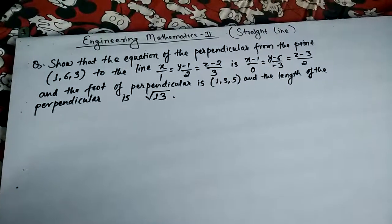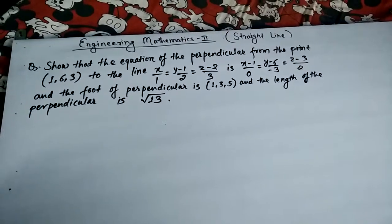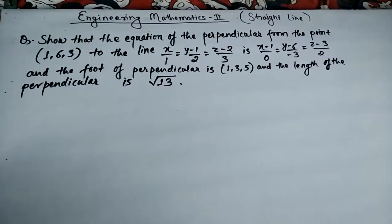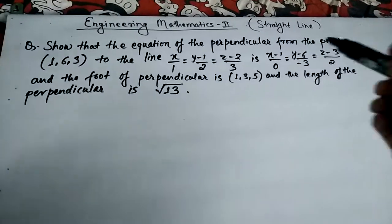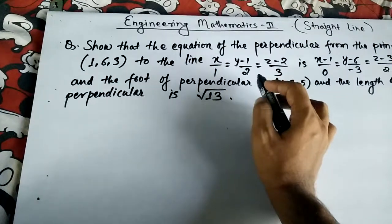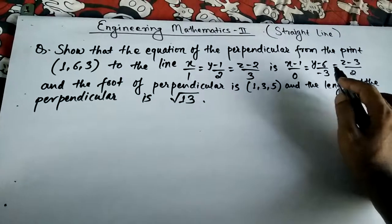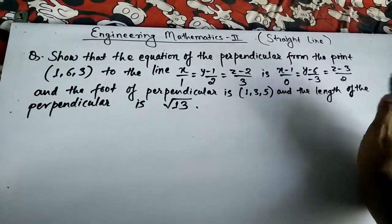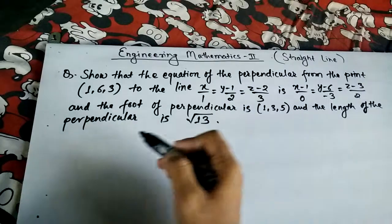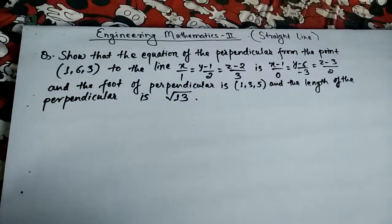Hello guys, welcome to another video tutorial on straight lines from engineering mathematics. We have a question: show that the equation of the perpendicular from the point (1,6,3) to the line x/1 = (y-1)/2 = (z-2)/3 is x-1/0 = (y-6)/-3 = (z-3)/2, and the foot of perpendicular is (1,3,5) and the length of perpendicular is √13.